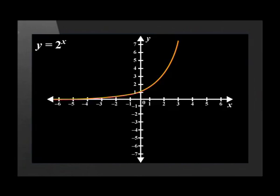Any change in the a, b, and q values affects the parent exponential graph. The parent exponential function is y is equal to 2 to the power of x.